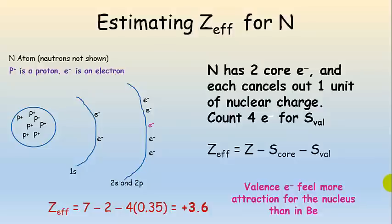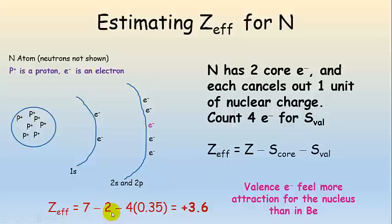Moving across to nitrogen — seven protons, seven electrons, configuration 1s2 2s2 2p3. Two electrons are in the 1s core, and five are valence electrons in the 2s and 2p. Using simplified Slater's rules: Z_eff = 7 − 2(1) − 4(0.35) = 7 − 2 − 1.4 = 3.6. The effective nuclear charge for nitrogen went up again.